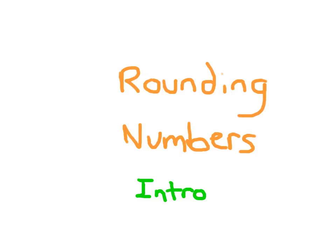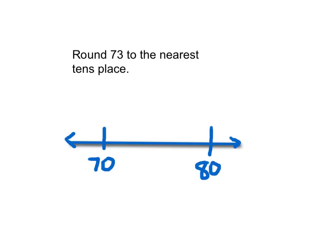Introduction to rounding numbers. We might be given the problem: round 73 to the nearest tens place.